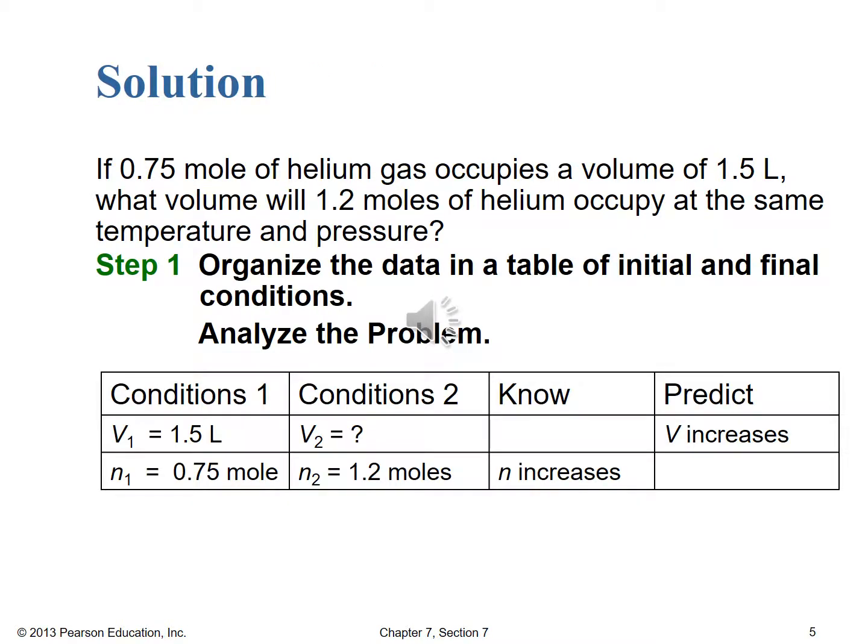Applying those old steps we've already worked several times on similar gas law problems. Step one: organize the data into a table of initial and final conditions and analyze the problem. The initial volume is 1.5 liters and the initial number of moles is 0.75 mole. We're looking for the final volume, and we know the final number of moles is 1.2. We also know that moles increased — from 0.75 to 1.2 — so if moles increases, volume should also increase. We expect some value greater than 1.5, which should help narrow things down on the multiple choice.